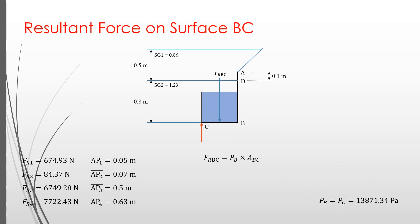The pressure distribution above BC is represented by a rectangle. Or, by considering the width of the gate, it is a rectangular box, where the volume represents the resultant force.